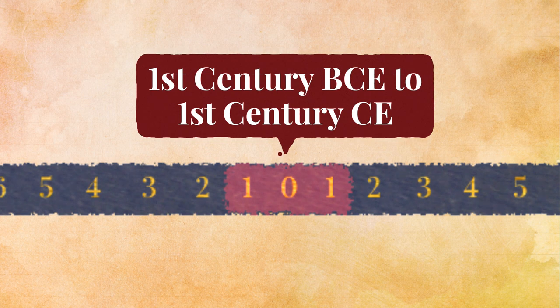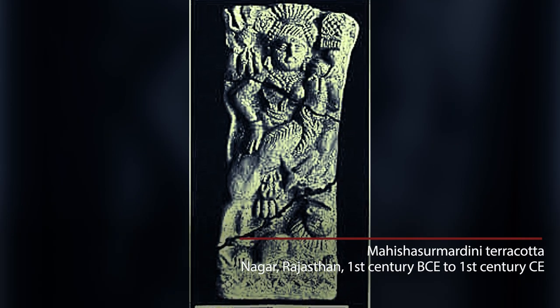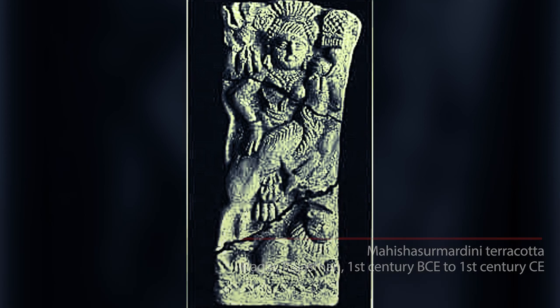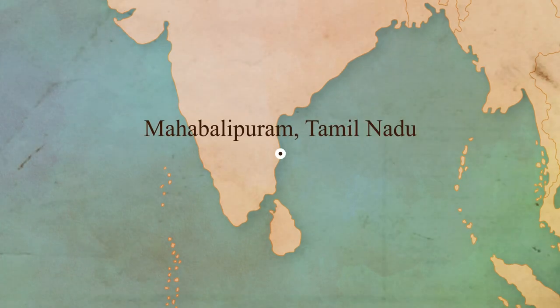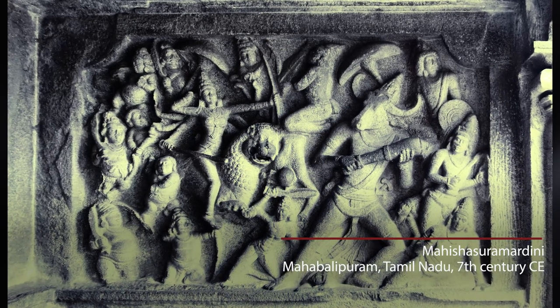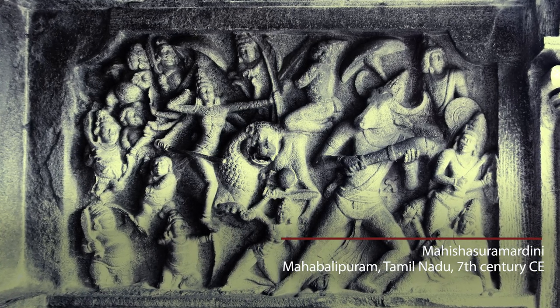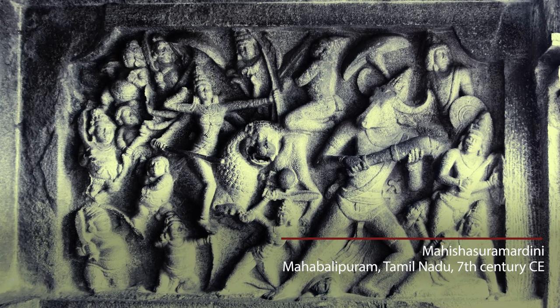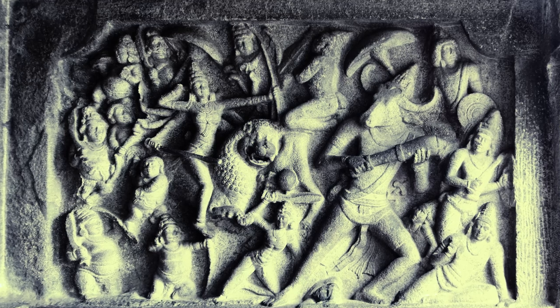Did she inspire Indian traditions, or did Indian traditions inspire this goddess? That is up to speculation. But we know that in the Kushan period, we find images of a multi-armed goddess fighting a buffalo. And in Mamallapuram, this image explodes — the goddess riding a lion and leading an army against Mahishasur, who has an army of his own. A very military, royal, regal image, which is patronized by kings.